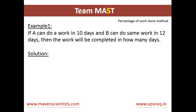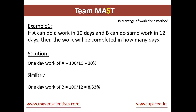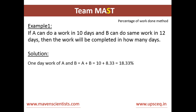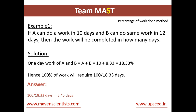Let's solve the same problem using the percentage of work done method. If A can do work in 10 days and B can do the same work in 12 days, then the work will be completed in how many days? The 1 day work of A is 100 divided by 10, which equals 10 percent. For B, we have 100 divided by 12, which equals 8.33 percent. So the combined work of A and B together is 10 plus 8.33, which equals 18.33 percent per day. Dividing 100 by 18.33 gives us the number of days required to complete 100% of the work, and the answer is 5.45 days.